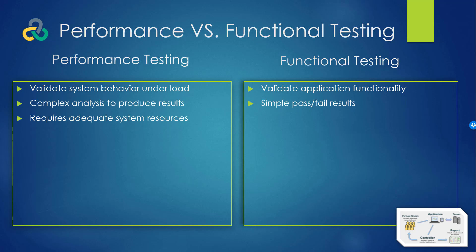For performance testing, adequate system resources are required. Based on the type of load you're going to run — number of users, number of transactions — and if you're comparing to a production system or SLAs, you have to have a system that allows you to run that load and get meaningful measurements. For functional testing, you don't need a full-fledged system; you just need a small system functioning enough to walk through scenarios one user at a time, whereas performance testing involves running many, many users.